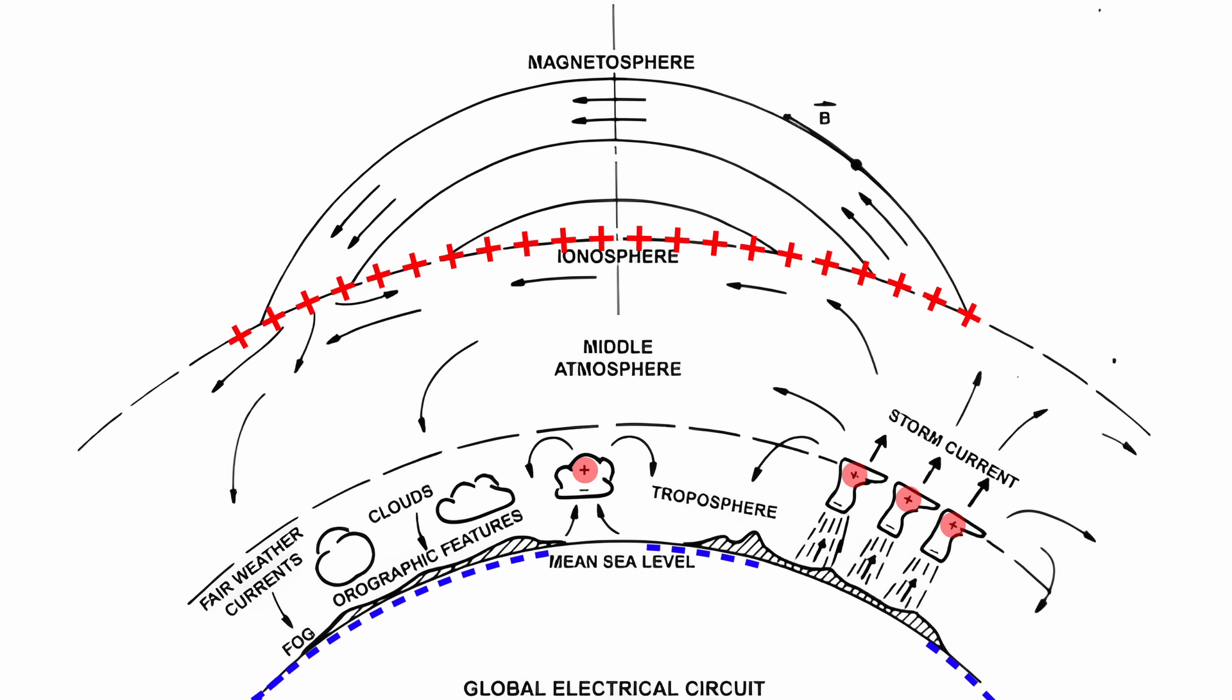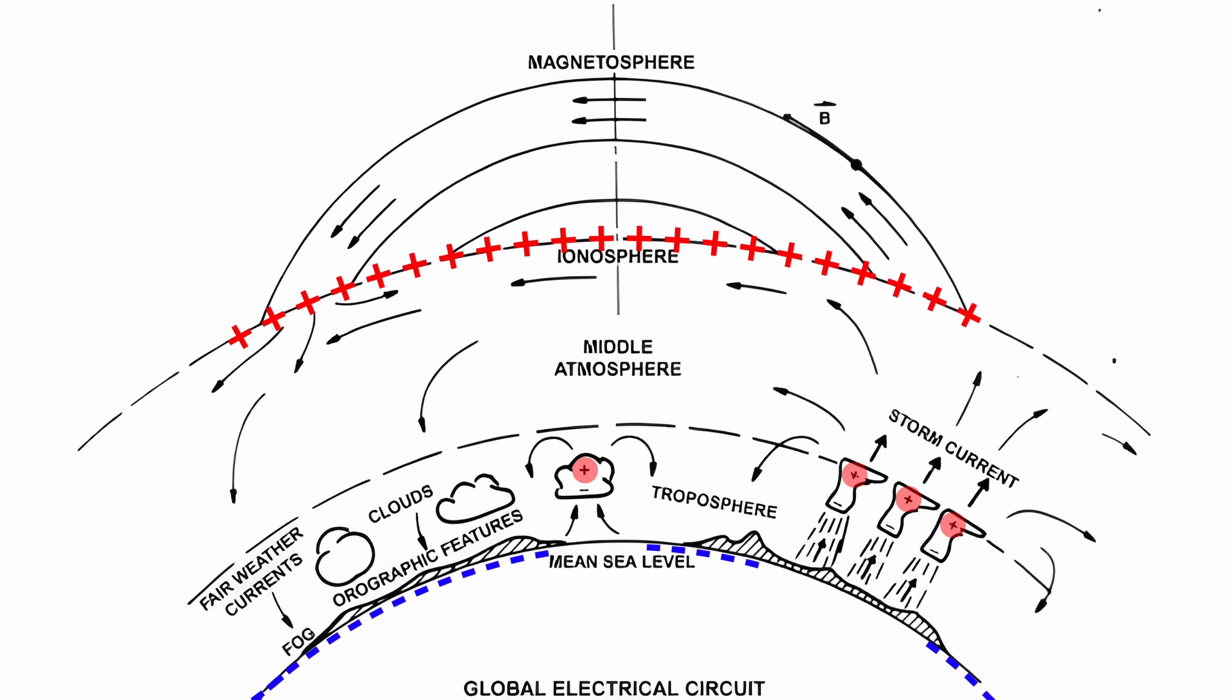The negative charge on the ground and the positive charge in the air above means that there is a downward pointing 100 to 300 volts per meter electric field during normal fair weather conditions. Note that the ground is normally positively charged underneath a thunderstorm and the electric field at the ground under a thunderstorm is normally more intense at thousands of volts per meter.